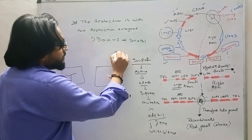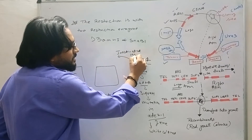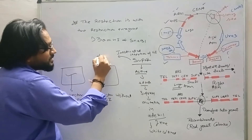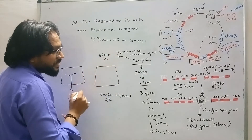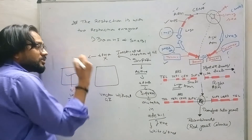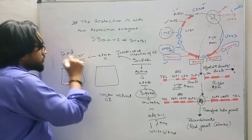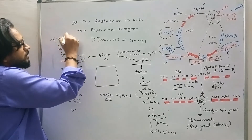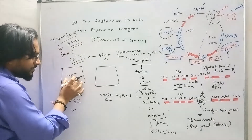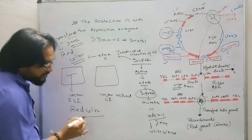So the transformed yeast cells with the vector containing the gene of interest will show red colored colonies. In this way, you can perform the selection — red colonies are recombinants (with gene of interest inserted into SUP4), and white colonies are non-recombinants (SUP4 intact, no insert).